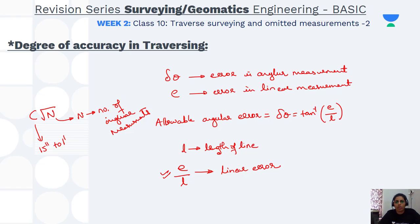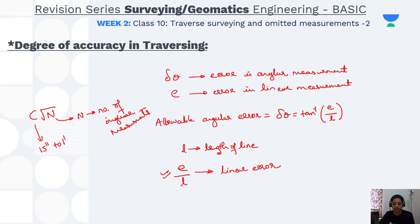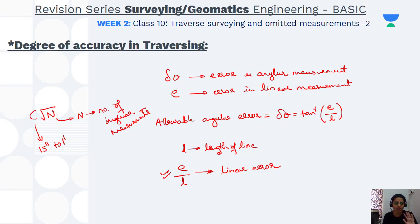That covers traversing and omitted measurements. In tomorrow's class we will deal with leveling. You can join at a sharp 5 on the Academy ACCORD channel. Please like the video for attendance, subscribe to our Academy ACCORD channel, and hit the bell icon to get all class notifications. Have a good evening, see you tomorrow, bye.